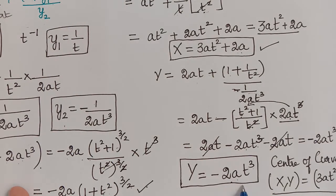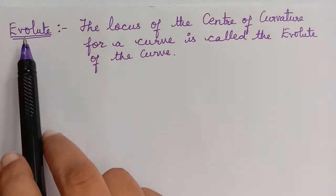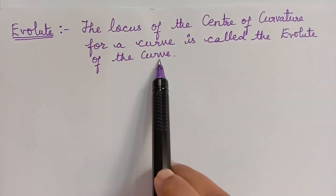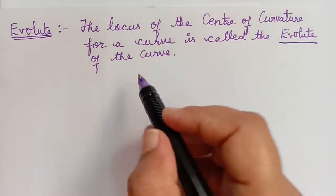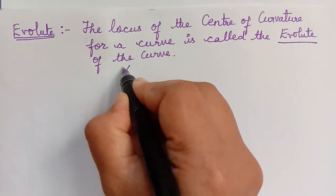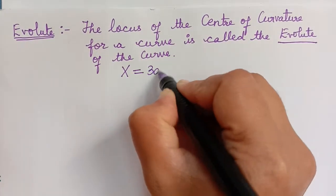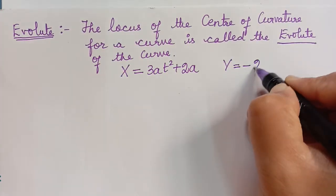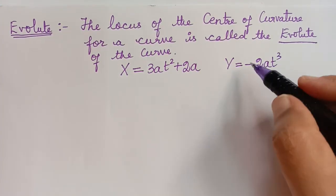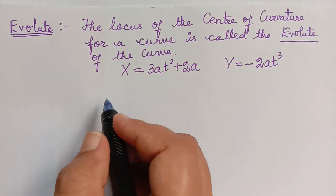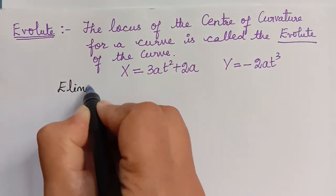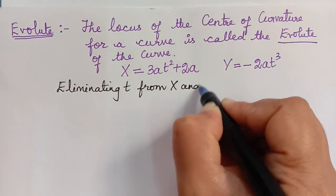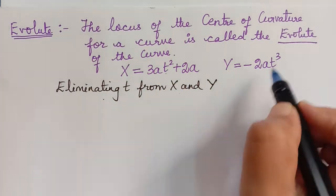Next we find the evolute of this parabola. By definition, the evolute of a curve is the locus of the center of curvature. To find the evolute, we write the coordinates of the center of curvature: X = 3at² + 2a and Y = -2at³, and then eliminate the parameter t from these two equations.